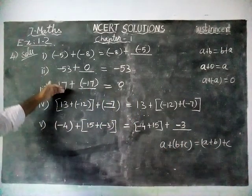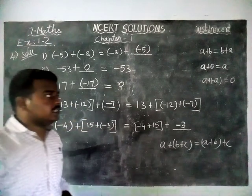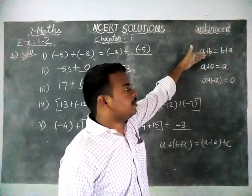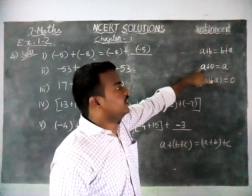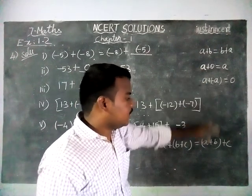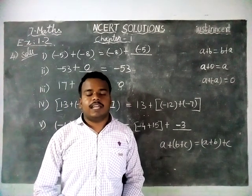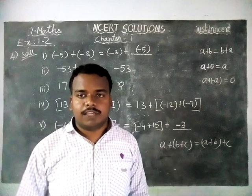So these all the fill in the blanks, we have filled by using the properties. First one, commutative property. Next one, additive identity. Third one, additive inverse. And four and five, associative properties. So if you are having any doubts, kindly type it in the comments box. Thank you.